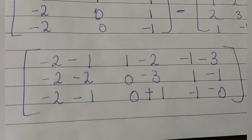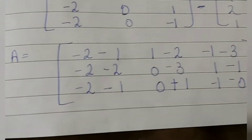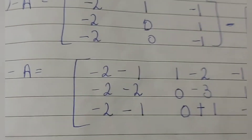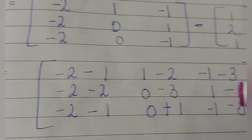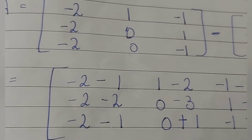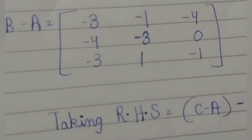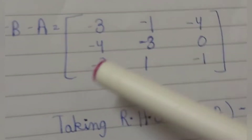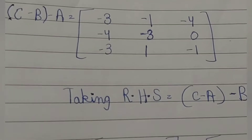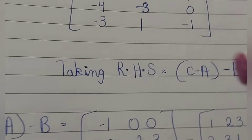We get the output values. Continuing the calculation with the assigned minus signs and values — minus 3, minus 1, minus 4, minus 3, 0, minus 3, 1, minus 1. So we have the left hand side computed. Now we will solve the right hand side, which is (c minus a) minus b.